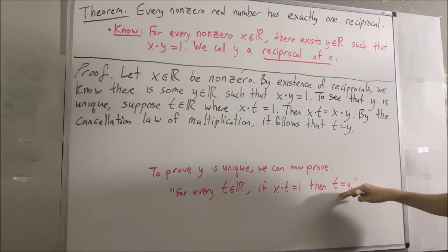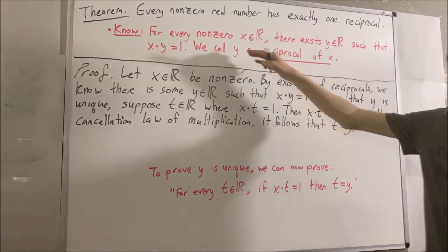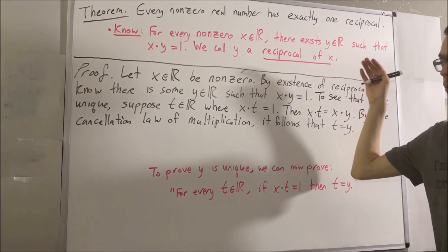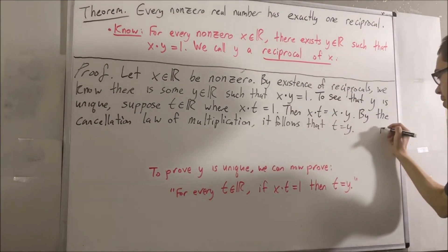And that is exactly what we wanted to prove in order to show that y is unique. So we have shown that y is the only reciprocal of x. And that's it. This completes the proof.